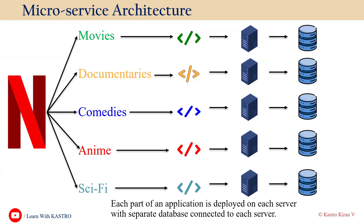In microservice-based architecture, scalability is very easy. For instance, if there's more traffic towards movies, scaling only the movies-related service is straightforward — not like in monolithic architecture. Faster development also happens because development teams can work on different services simultaneously, leading to faster development of the whole application. Improved maintainability makes troubleshooting easier when issues arise.